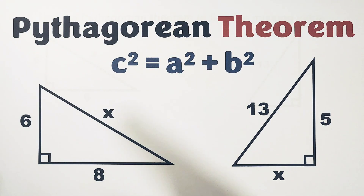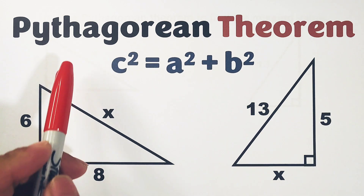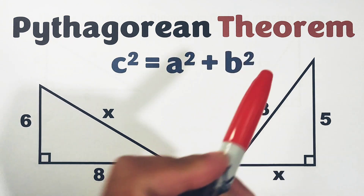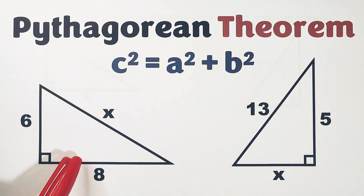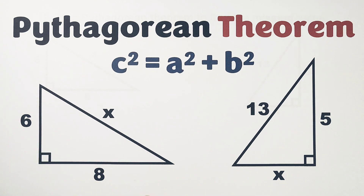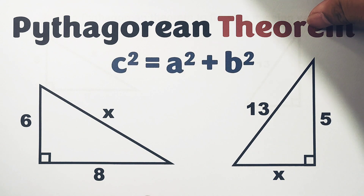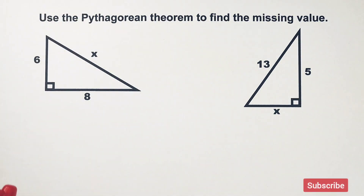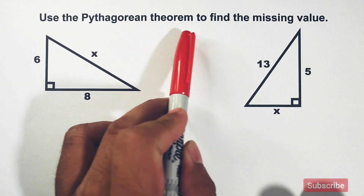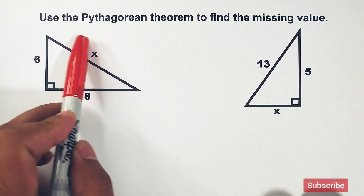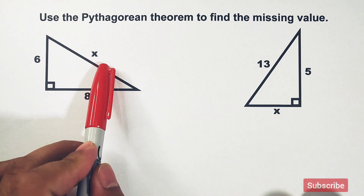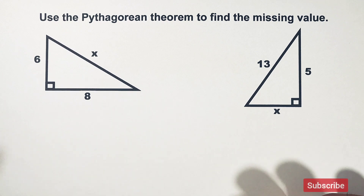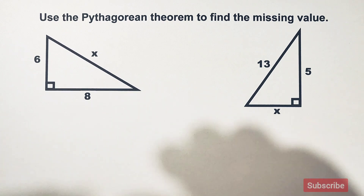Hi guys, it's me, Teacher. In today's video we will talk about the Pythagorean theorem. It says that in a right triangle, the sum of the squares of the legs is equal to the square of its hypotenuse. We are going to use the Pythagorean theorem to find the missing value, and as you can see, these triangles are right triangles.